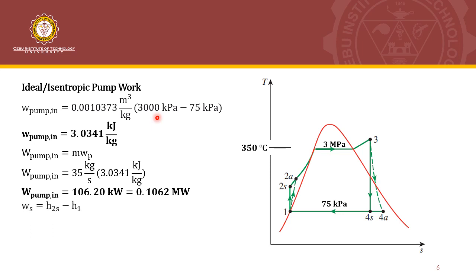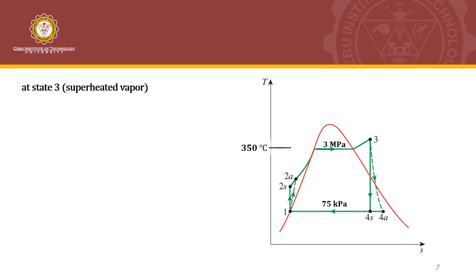We use that result to get the value of H2S, the enthalpy at state 2S. By plugging in the pump work input and H1, we get H2S as 387.4241 kJ per kg. Then at state 3, this is a superheated vapor, so we use the superheated vapor table. We obtain H3 as the enthalpy at 3 MPa and 350 degrees Celsius, which is 3,115.3 kJ per kg.